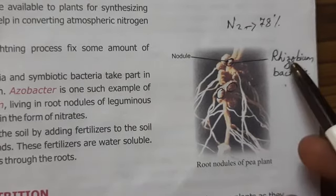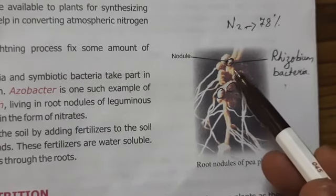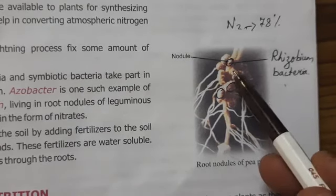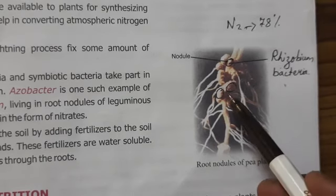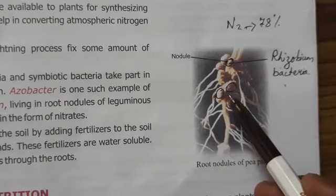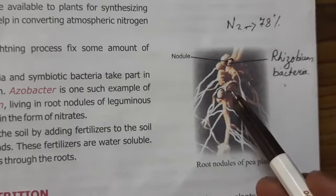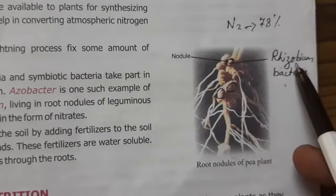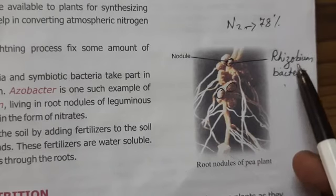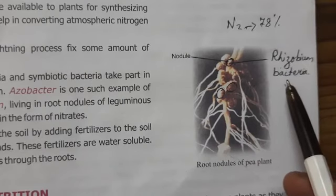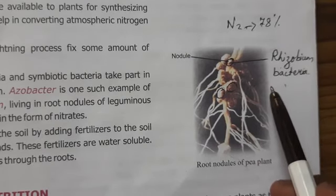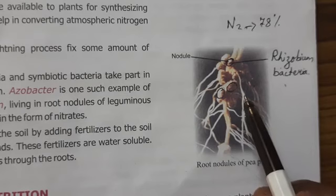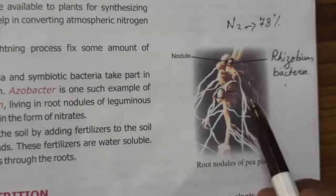You can clearly see that rhizobium is living inside the nodule, so it is getting shelter from the leguminous plant. And in return, rhizobium bacteria fixes nitrogen into simple proteins which can be used by the plants.